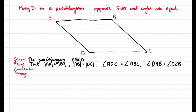We'd write down: what are we given? The parallelogram ABCD. And what do we want to prove? We want to prove that AD equals BC, that AB equals DC, that angle ADC equals angle ABC, and angle DAB equals angle DCB. For the construction, we are going to join A to C and label angles 1, 2, 3, and 4.